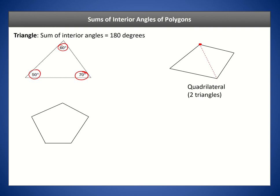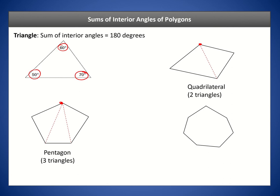Let's look at a pentagon — a five-sided polygon. If I start from one corner, that vertex, I can draw diagonals originating only from that vertex and I can form three triangles. Let's do one more: a seven-sided shape, or a heptagon. Pick one vertex, draw diagonals to the opposite corners, and in total we have five triangles.